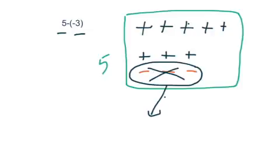What's left? What's the value of my board now? You can see the value of my board now is eight. Hence, the answer to five take away negative three is eight.